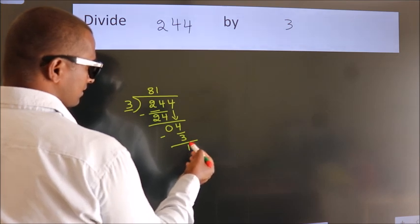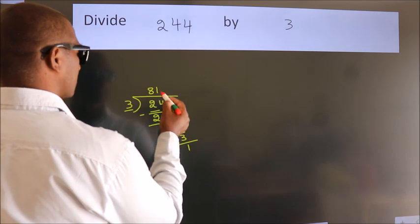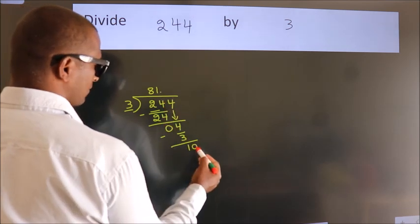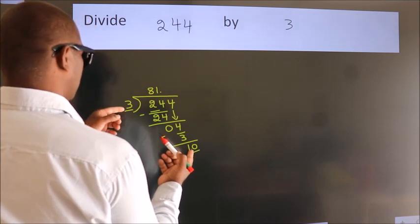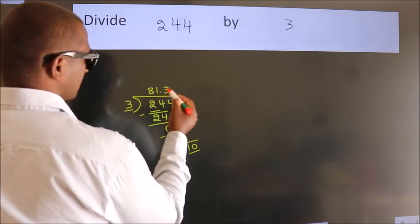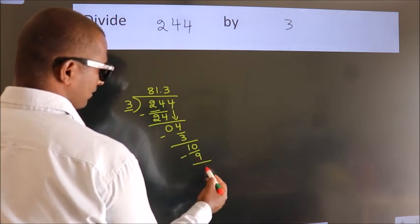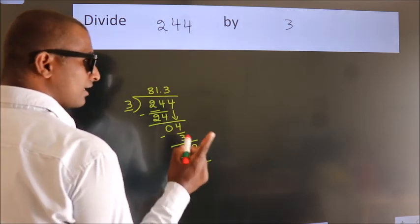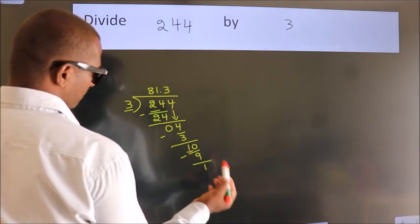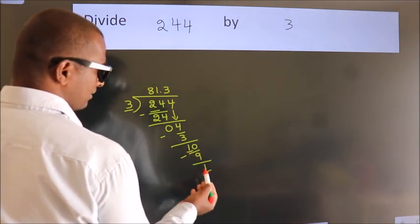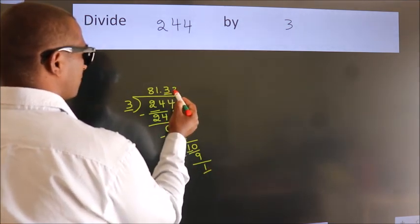After this, no more numbers to bring down. So what we do is we put a dot and take 0 — so 10. A number close to 10 in the 3 times table is 3 threes are 9. Now we subtract. We get 1. Now observe: we had 1 here, and we got 1 again.